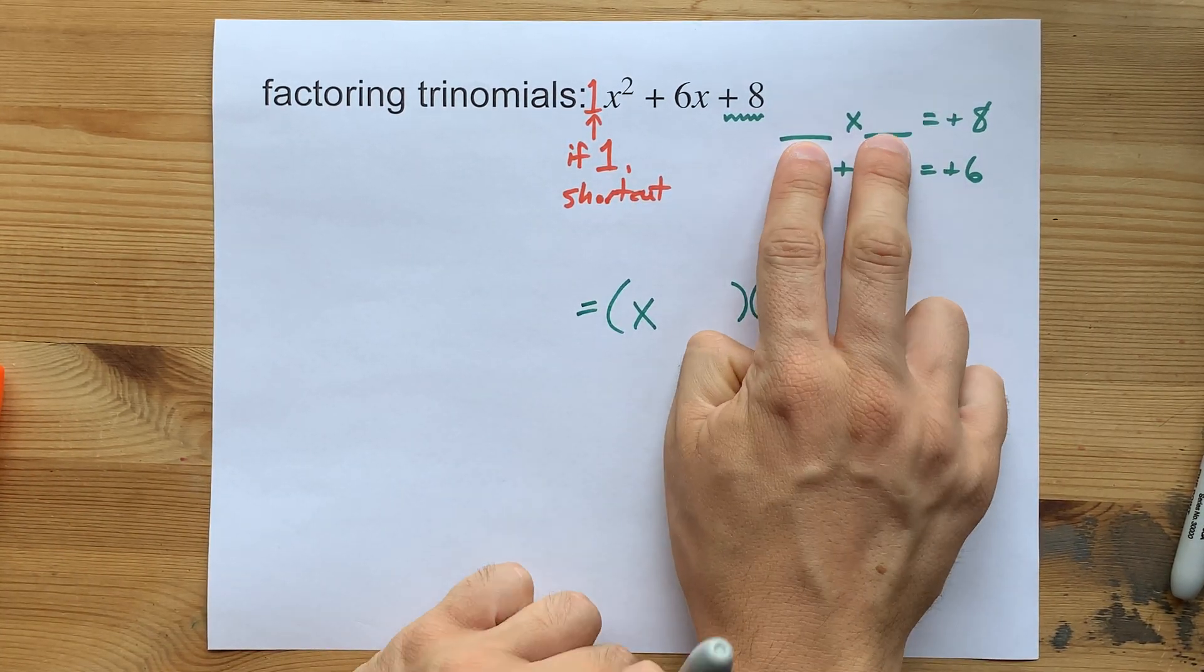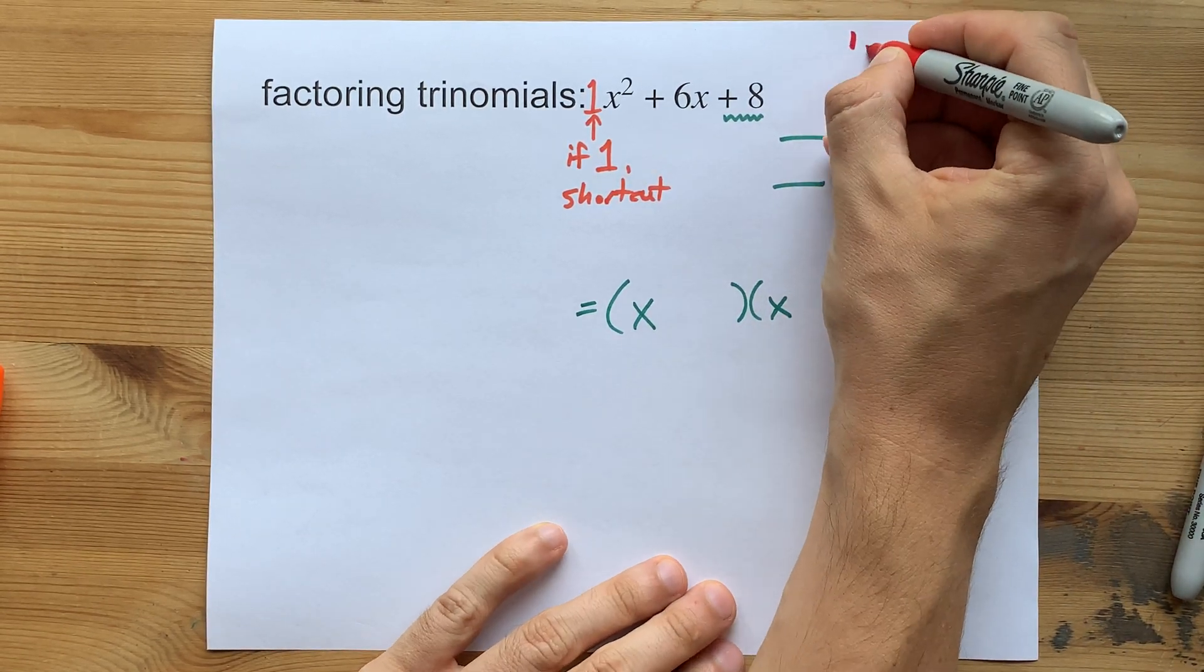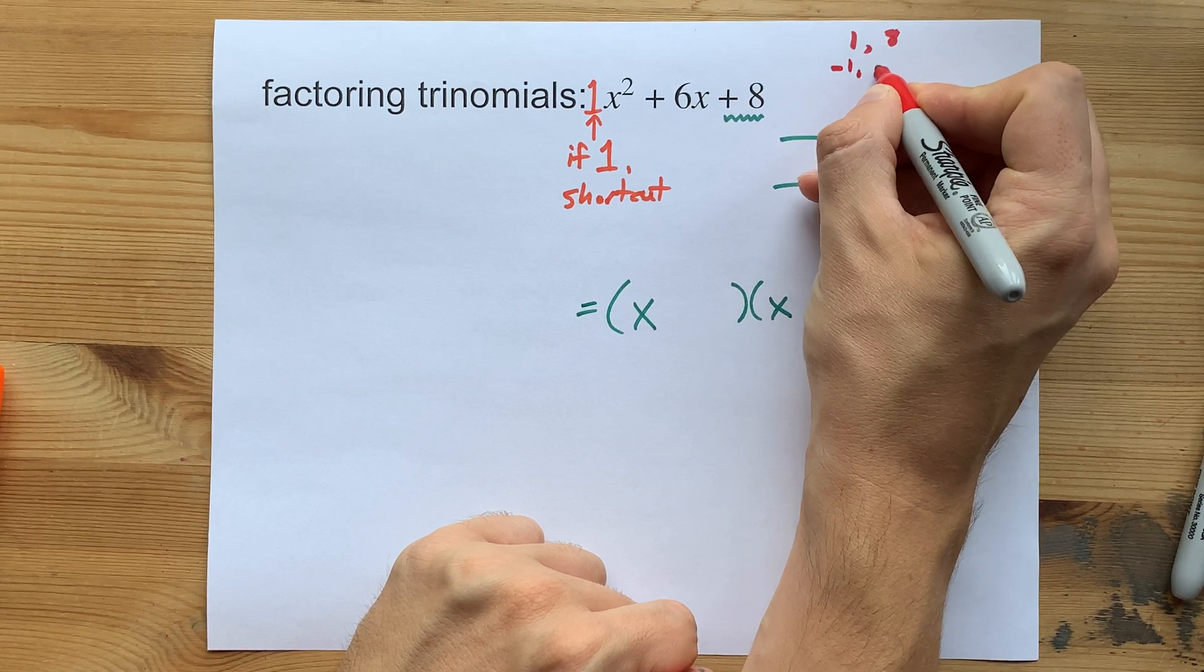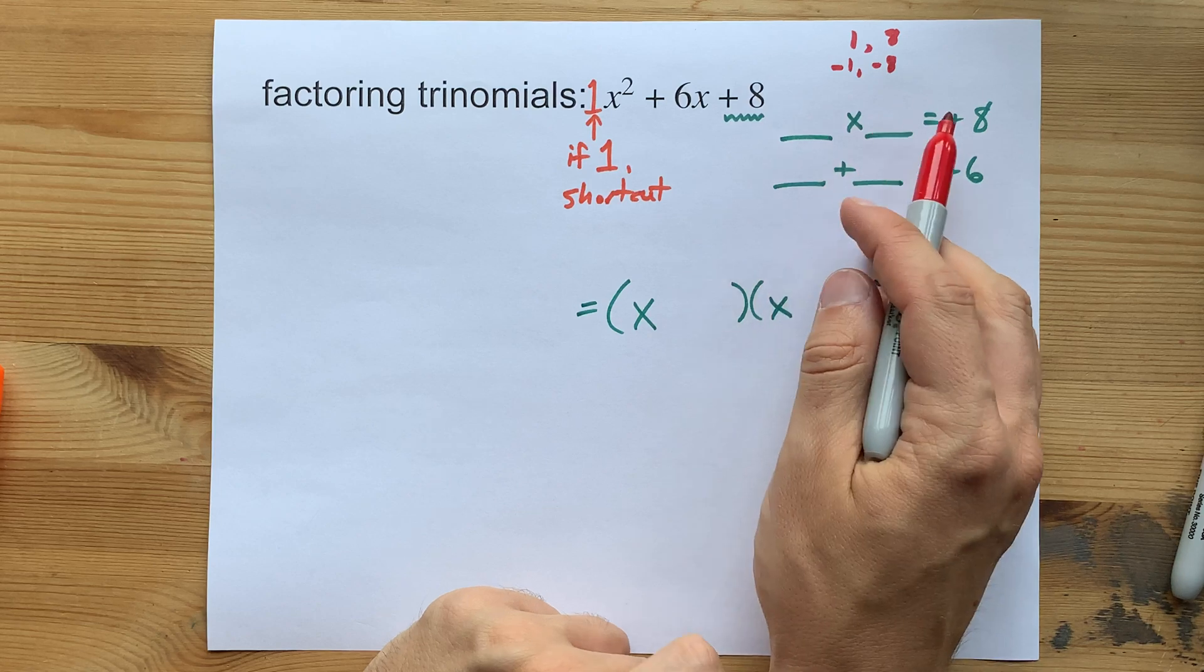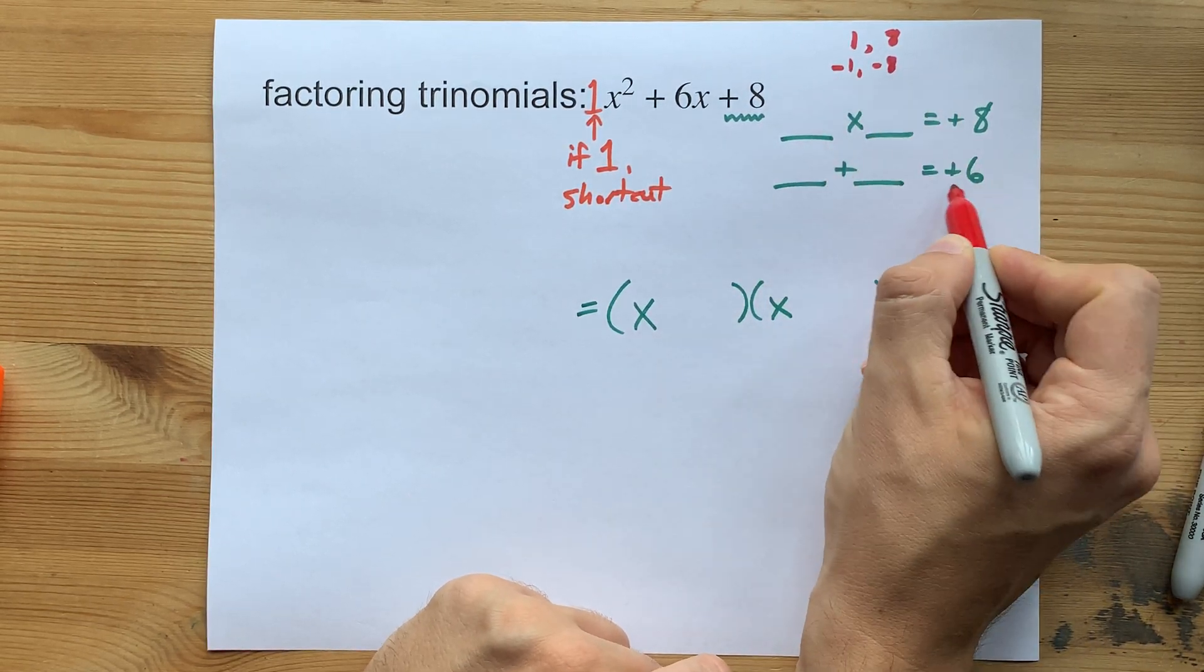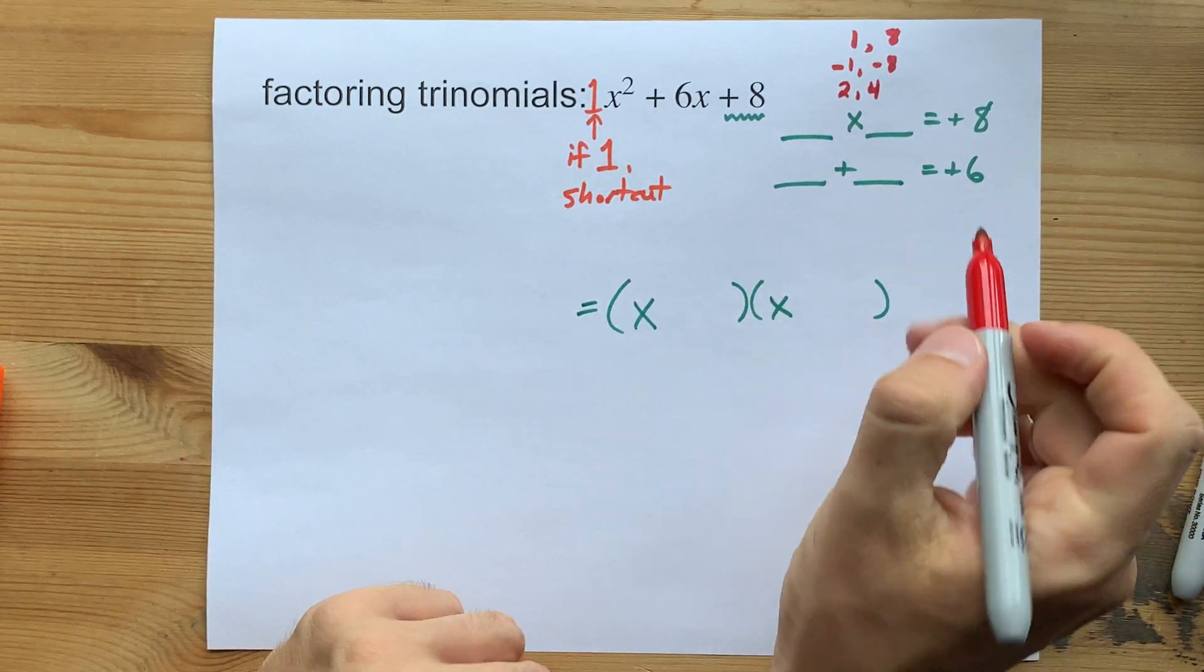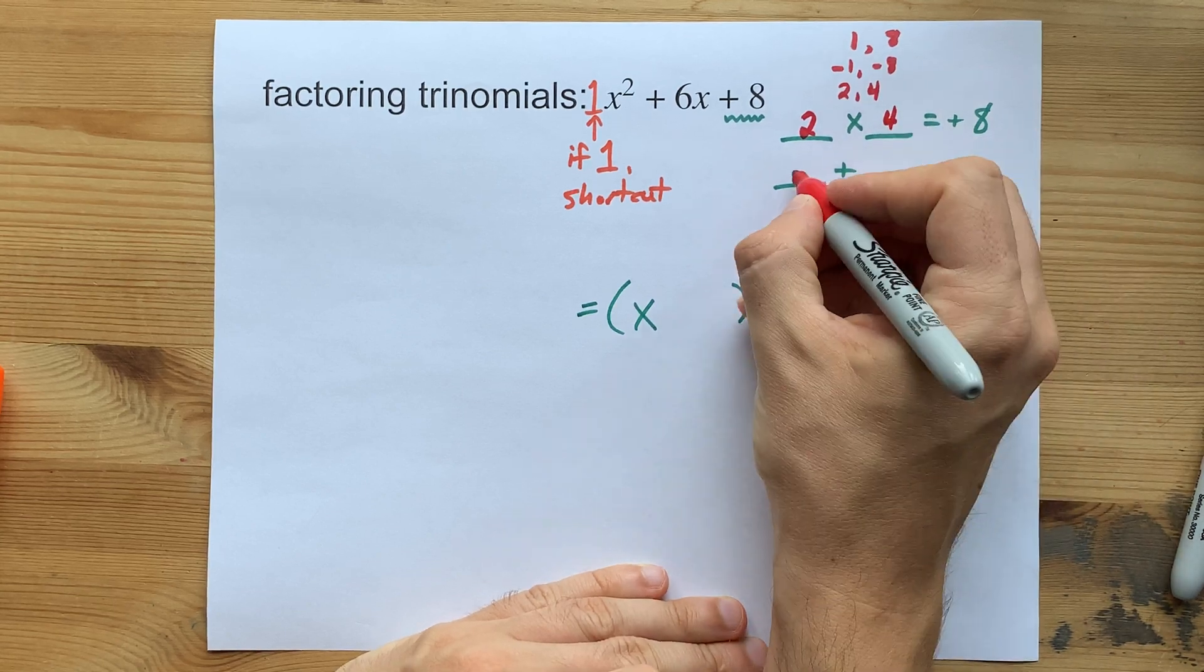Can you find two numbers that multiply to 8 and add to 6? Well, I'm going to start listing them. I know 1 and 8 multiply to 8, but when I add them together I get 9. Negative 1 and negative 8 also multiply to positive 8. I'm just saying that because sometimes you're going to have to deal with negative numbers. But they add to negative 9, which is not positive 6. I know 2 and 4 multiply to positive 8. And they add to positive 6. So it's positive 2 and positive 4.